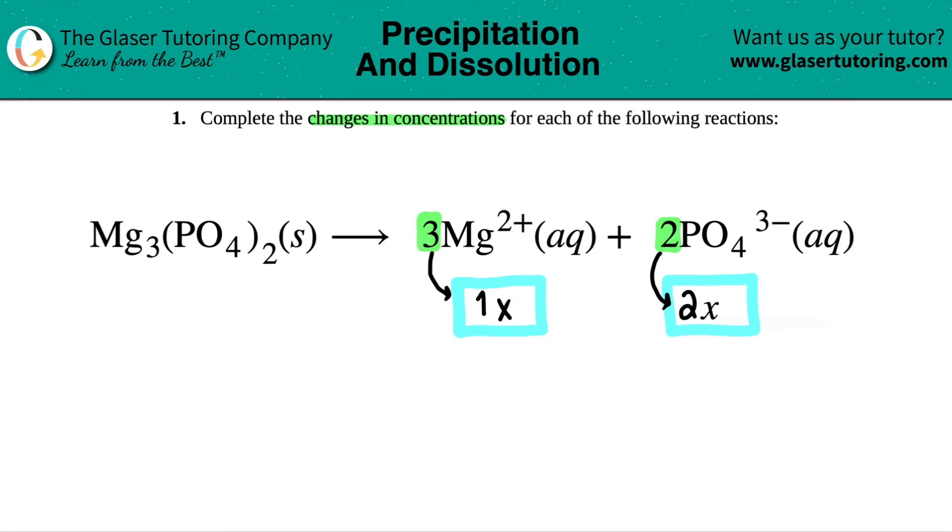But would this be a 1X, a 2X, a 3X? Well, it always comes from the coefficient. Since I have three magnesiums, this would have to change by 3X. And just like we said before, since you had two phosphates, this has to have been a 2X value. And those are your answers to this problem.